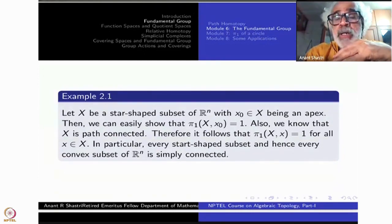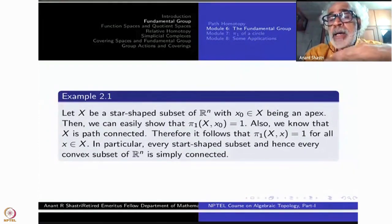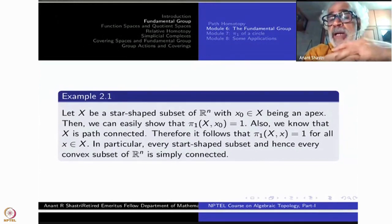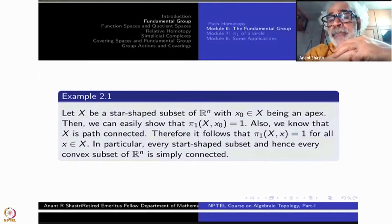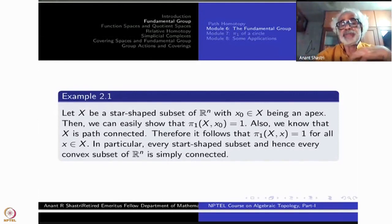So all star-shaped subsets have trivial fundamental group and are simply connected. In particular, every convex subset is simply connected, and in particular the whole ℝⁿ is simply connected. ℝ, ℝ², open disks, closed disks, regions inside an ellipse or ellipsoid — they are all simply connected because they are all convex subsets.